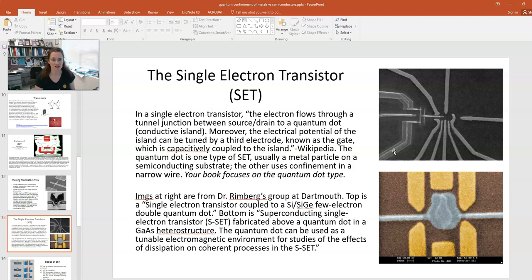Images at right are from Dr. Renberg's group at Dartmouth, and here they have a single electron transistor coupled to a silicon-silicon germanium double quantum dot here, and the bottom is a superconducting single electron transistor fabricated above a quantum dot in a gallium arsenide heterostructure.